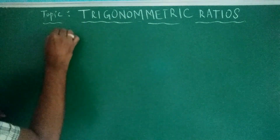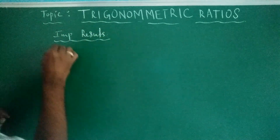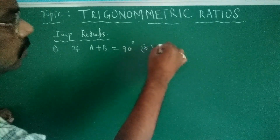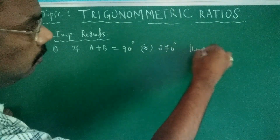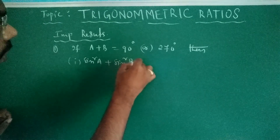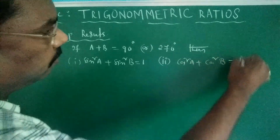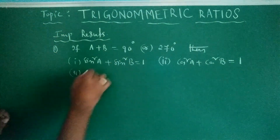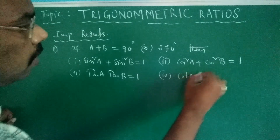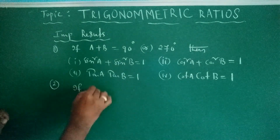Now here are some important results. First, if a plus b is equal to 90 degrees or 270 degrees, then: (1) sin²a + sin²b = 1, (2) cos²a + cos²b = 1, (3) tan a × tan b = 1, (4) cot a × cot b = 1.